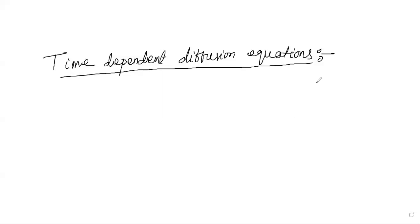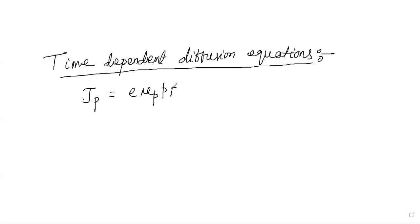Hello guys, today in this video we are going to discuss about time-dependent diffusion equations. If you remember, we have already discussed the current density for holes, which can be written as E times mu_P times P, where P is the concentration of holes and E is the applied electric field. This is the drift current density for holes.